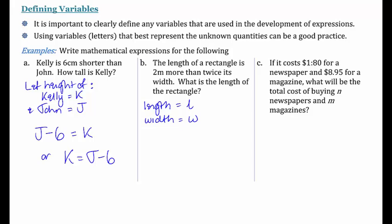So now we go back and we read the length of a rectangle. So the length of a rectangle is equal to two meters more than twice its width. Well, twice its width would be two w, but we want two meters more than that.